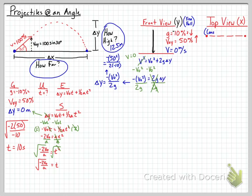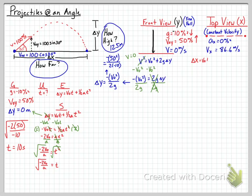From the top view, the velocity in the x-direction doesn't change — it's constant. That means the acceleration in the x-direction is zero. The velocity in the x-direction is found by taking the hypotenuse times the cosine of 30 degrees: 100 × cos(30°) = 86.6 meters per second. Since it's constant, we just call it vx.